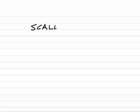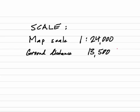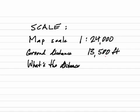Let's start out with a scale problem. Let's say we have a map with a scale of 1 to 24,000, and we have a ground distance of 13,500 feet. We want to know what is the distance on the map for that 13,500 feet.